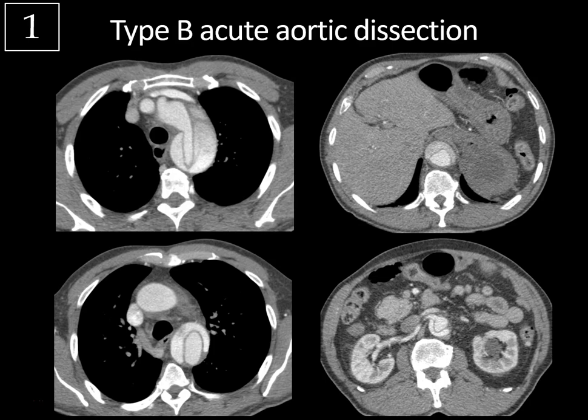Type A aortic dissections are actually more common, accounting for about 60% of dissections. Those involve the ascending aorta and they're treated surgically due to the risk of coronary artery occlusion, aortic valve incompetence, or rupture into the pericardial sac causing cardiac tamponade.